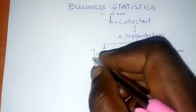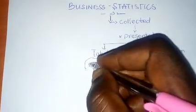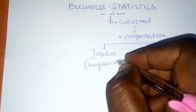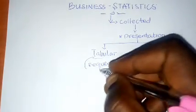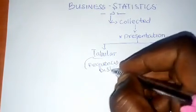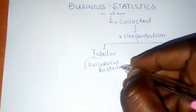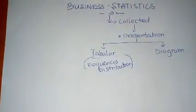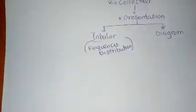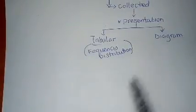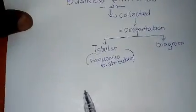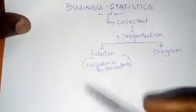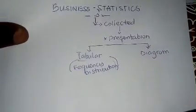Then this tabular presentation is called, in statistics, frequency distribution. That is, we make use of tables in form of rows and columns to present the data that is collected.